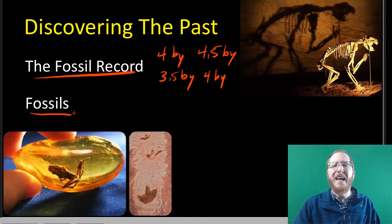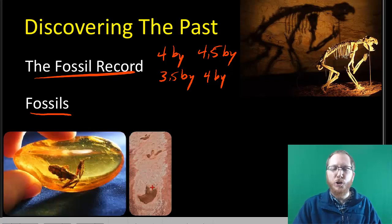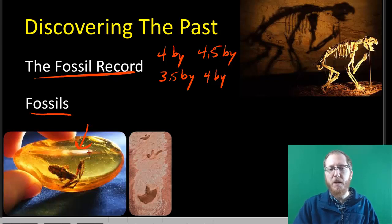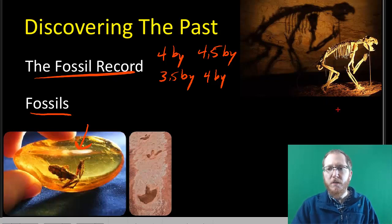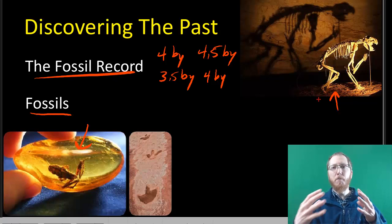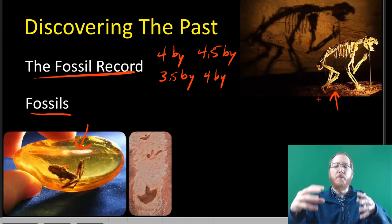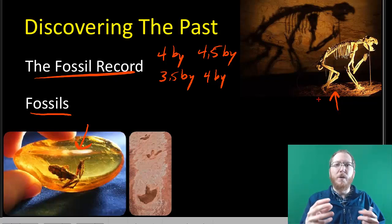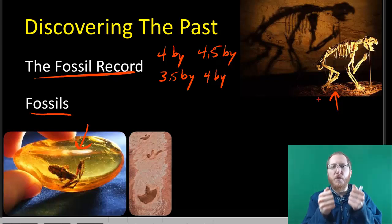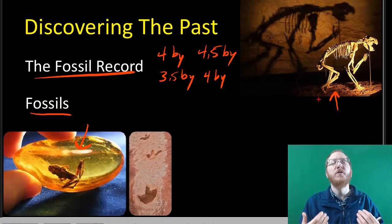Fossils themselves are any remnant of life. That could be footprints, waste like feces, whole organisms caught in amber or tree sap, mummified specimens, organisms caught in tar pits, or parts of organisms like bones and shells. It can also be mineralized imprints or imprints that have been filled in by mineral rock, giving us a rock replica of an organism. All those things are remnants of life and can be used as fossils.